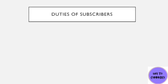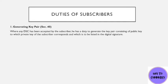Let's see what are the duties of a subscriber. The first duty is to generate a key pair. When any DSC — a digital signature certificate — has been accepted by the subscriber, he has the duty to generate a key pair consisting of a public key to which the private key of the subscriber corresponds, and which is to be listed in the digital signature.